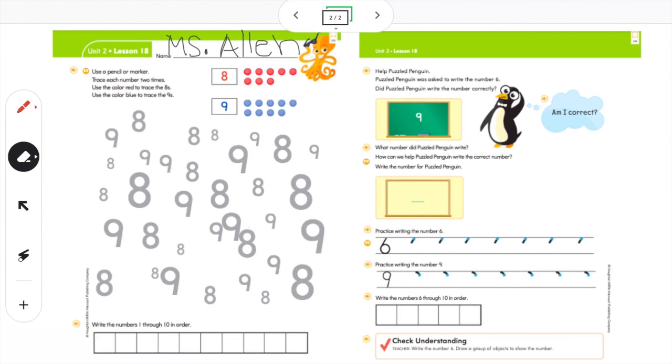Alrighty friends. Now that you have your crayons I want you to grab your red crayon. We're going to trace the number eight two times. You're going to trace the number eight right up here in this box. Start at the top. Curve down. Curve down. Curve back up and meet at the top. Go ahead and do it again. Curve down and around. Meet back at the top. Perfect.